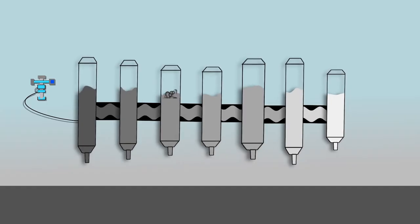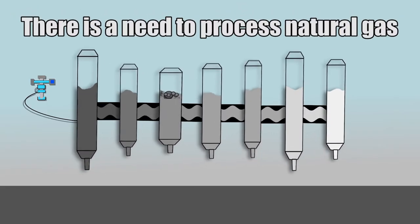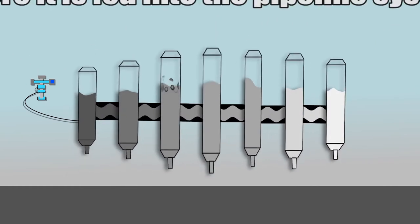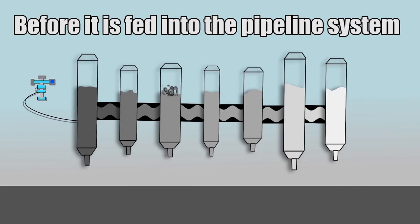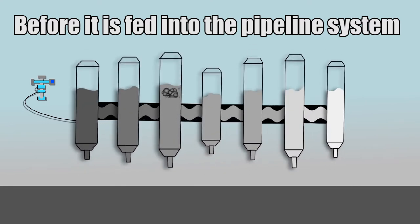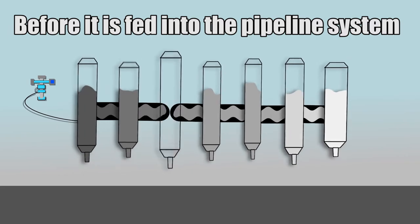So there is a need to process the natural gas as it comes out of the ground before it is sent to or fed into the pipeline system for transport to remote locations. There are essentially four components of natural gas processing.